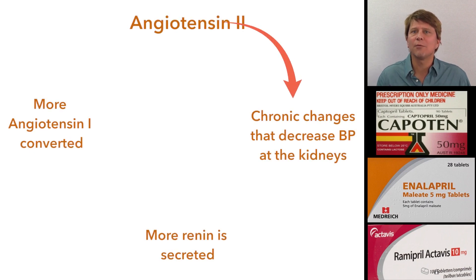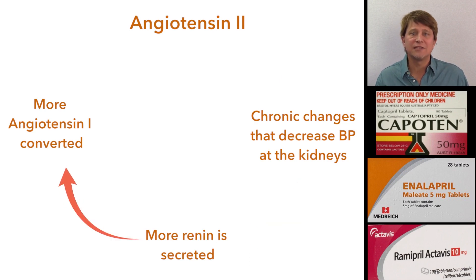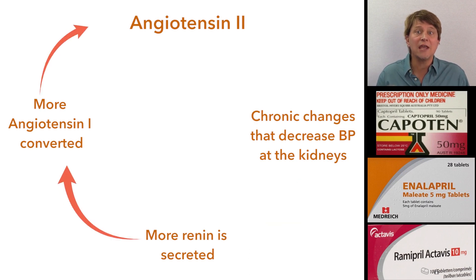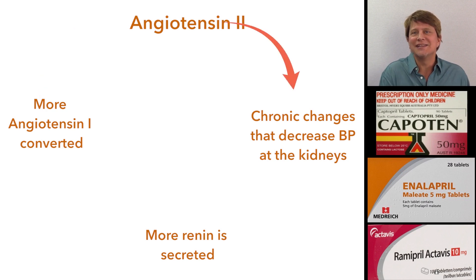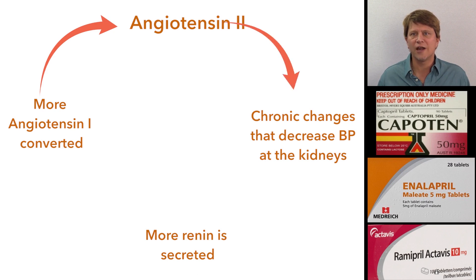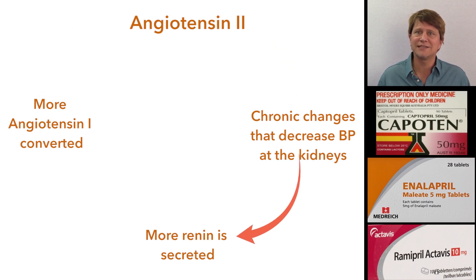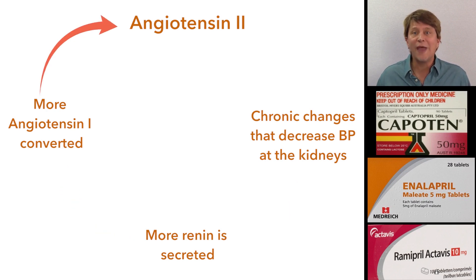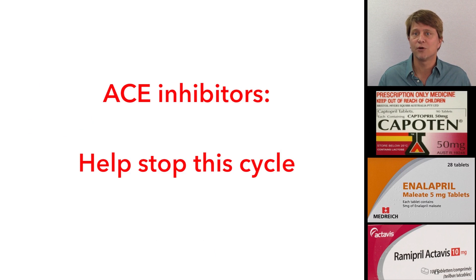Angiotensin II is a stress hormone that is way overused in conditions such as cardiovascular and renal disorders. The angiotensin II will actually lead to a lot of the chronic remodeling of the glomerulus, the ventricle, and the blood vessel walls, which perpetuates those disorders. So the ACE inhibitors are very valuable, not only in hypertension.